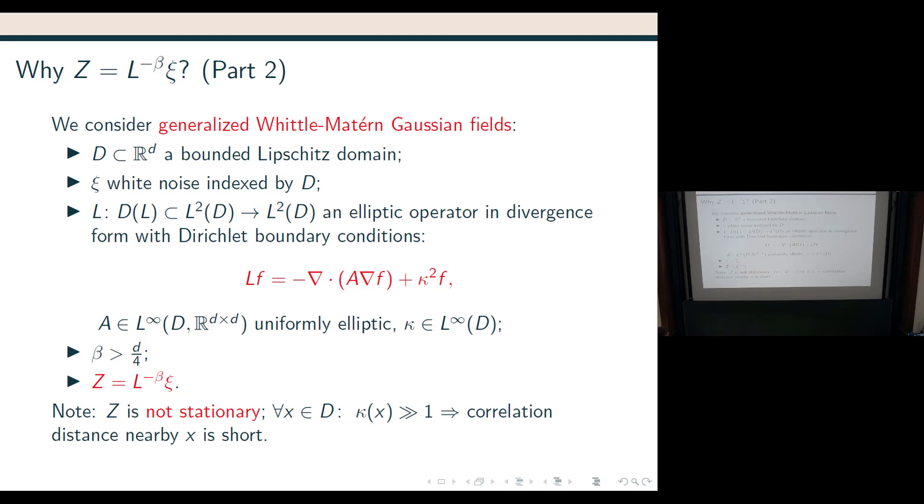And in this case, of course, C is not necessarily stationary. It could, of course, be, but not necessarily. And, roughly speaking, if you look at some points in the domain, if kappa in that point is very large, then the correlation distance nearby x is short, and if kappa is small, then the correlation distance is long. Again, this is not, we did not make this rigorous.